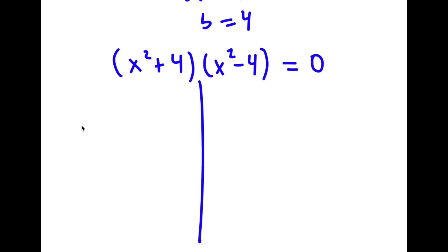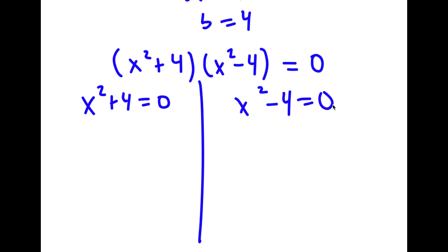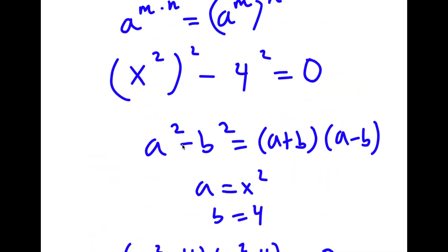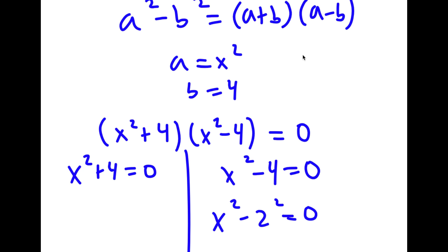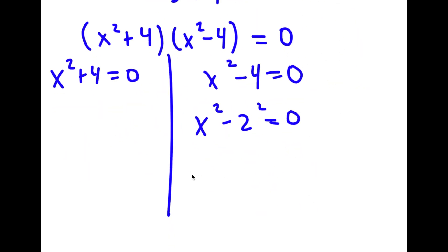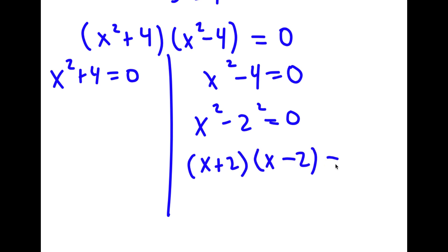This gives two equations: x squared plus 4 equals 0, and x squared minus 4 equals 0. For x squared minus 4 equals 0, I write 4 as 2 squared, giving x squared minus 2 squared equals 0. Applying the difference of squares again with a equal to x and b equal to 2, I get x plus 2 times x minus 2 equals 0.